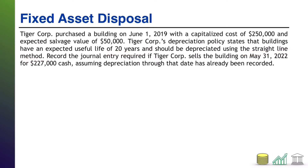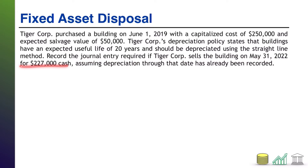Here's your first question. Record the journal entry required if Tiger Corps sells the building on May 31, 2022 for $227,000 cash. In this problem and all subsequent ones, assume that any depreciation through that date has already been recorded. Pause the video, try it for yourself, and when you're ready come on back and I'll walk you through the solution.